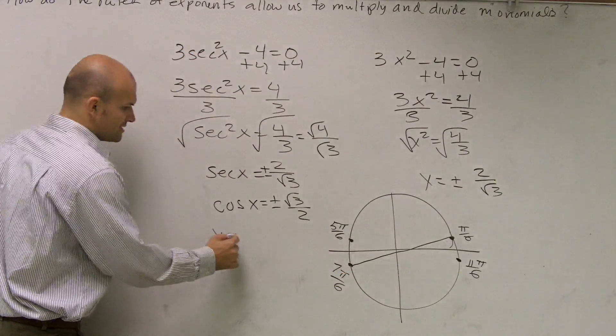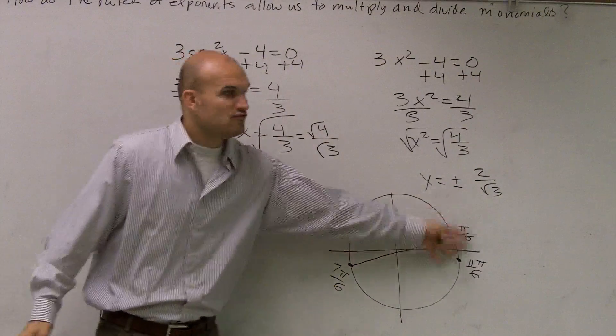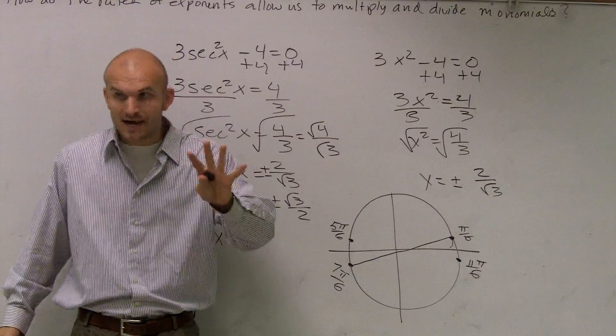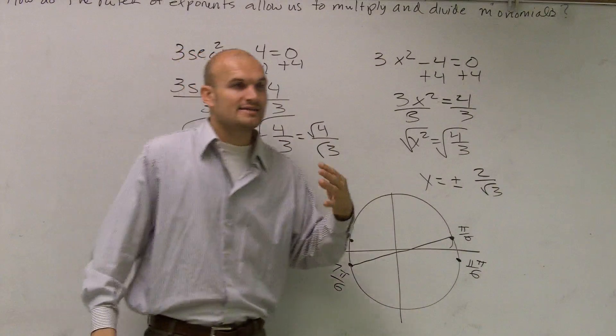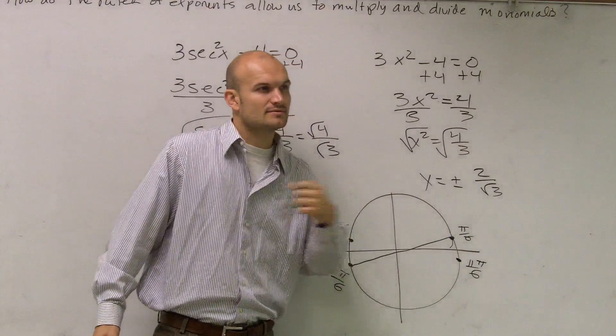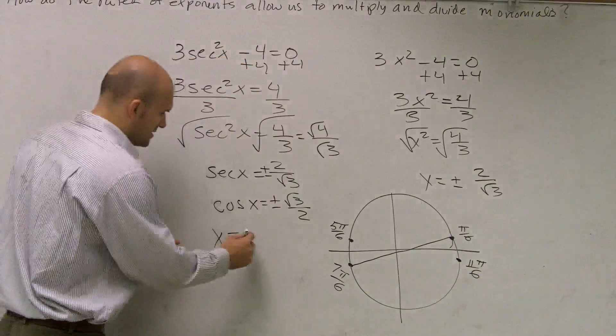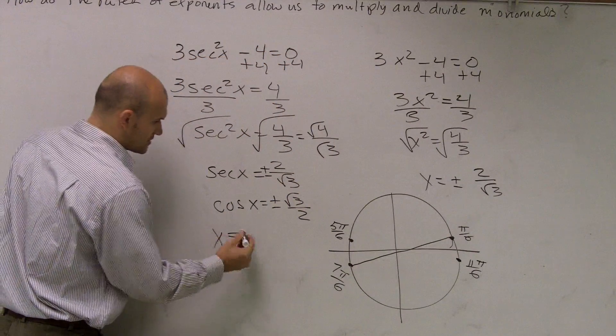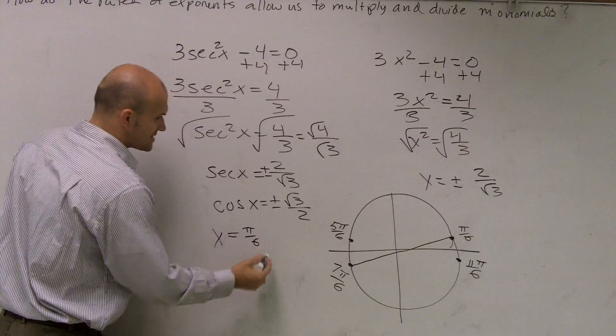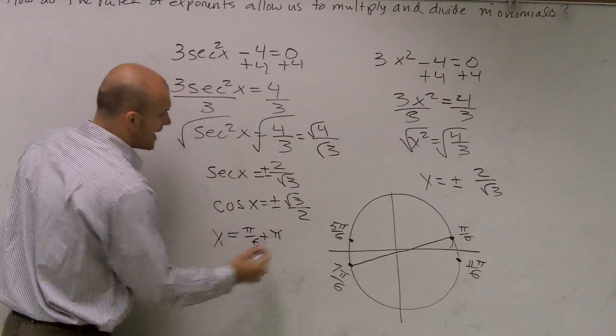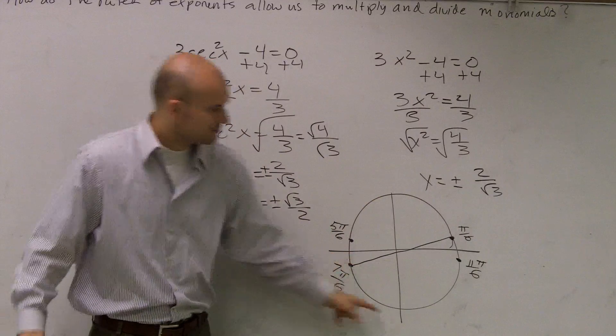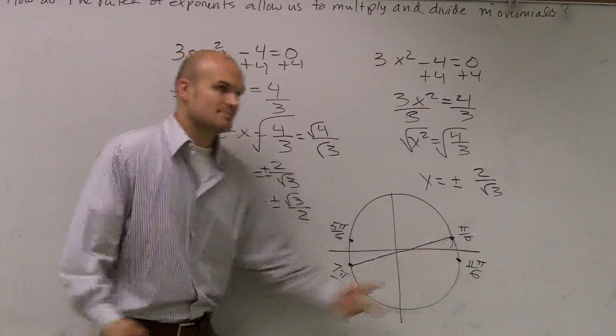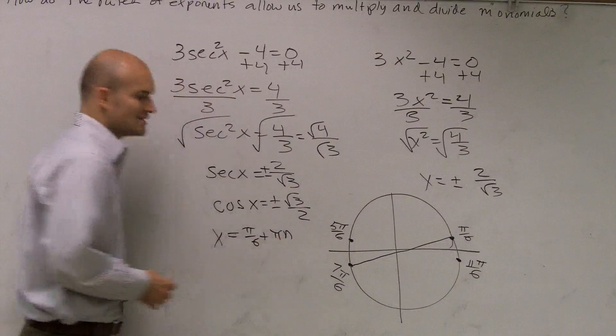So what I can do is say, instead of saying all four of these answers plus 2 pi n, that's very redundant. I don't have to do that. A simpler way I could say that is just say pi over 6 plus pi, and then how many times are you going to add pi? Well, I could add it once, twice, three times, four times, infinitely many times, right? So we'll use it as n.